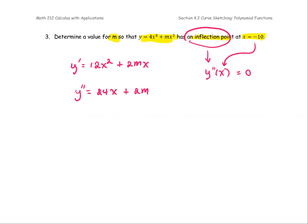The inflection point occurs at the critical point where y double prime equals zero. So with this, since we know that it will occur at x equals negative 10, replace x with negative 10 and then we're going to solve for m.